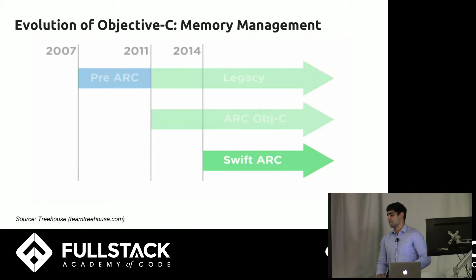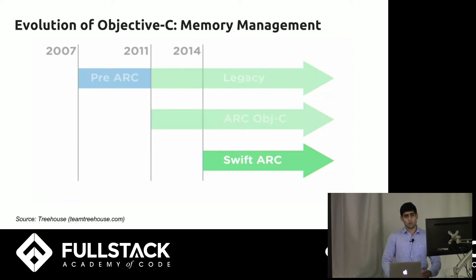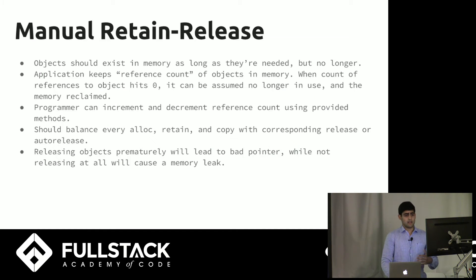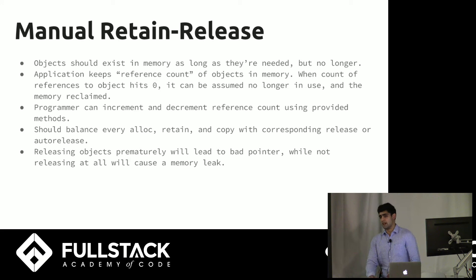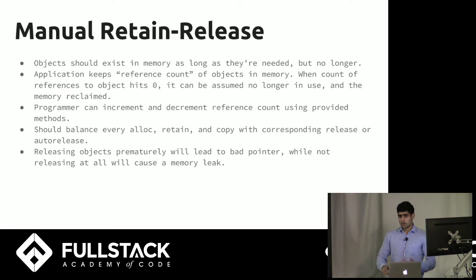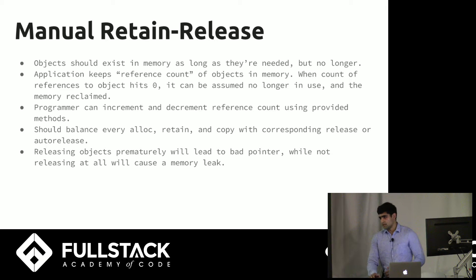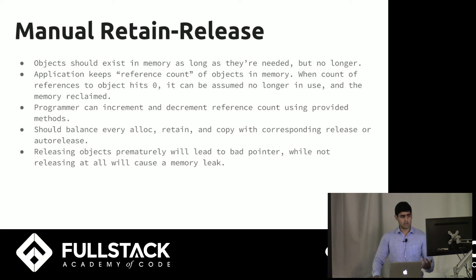Another really important thing is memory management — it's something that's evolved over time. When originally you had to manually manage your memory, what that means is: when you have an object, let's say x equals new object, y equals x — you have one object in memory and two references to it. When you say y equals null, you have one reference. Whenever you have no references left, you don't need it, so it's safe to reclaim that memory for something else.